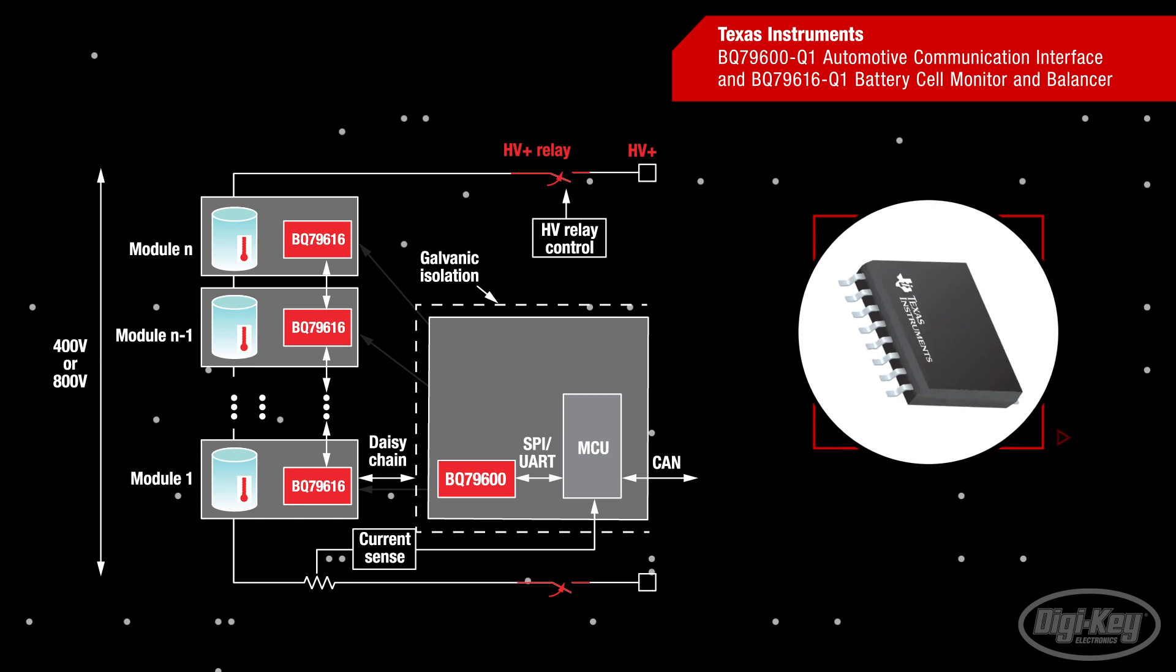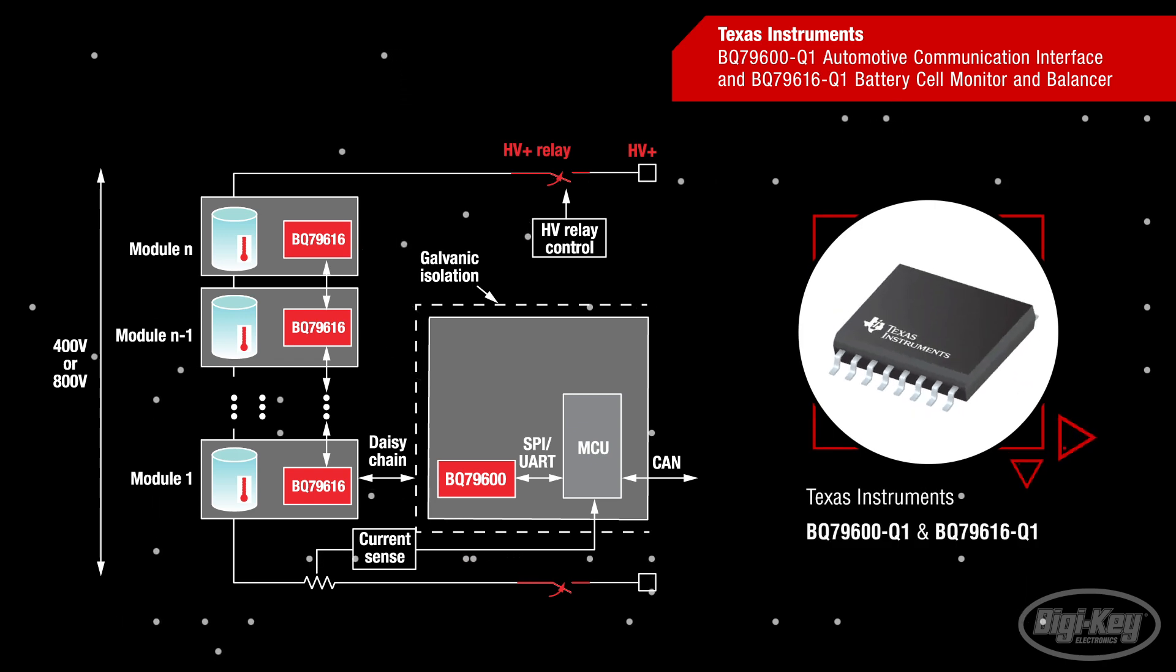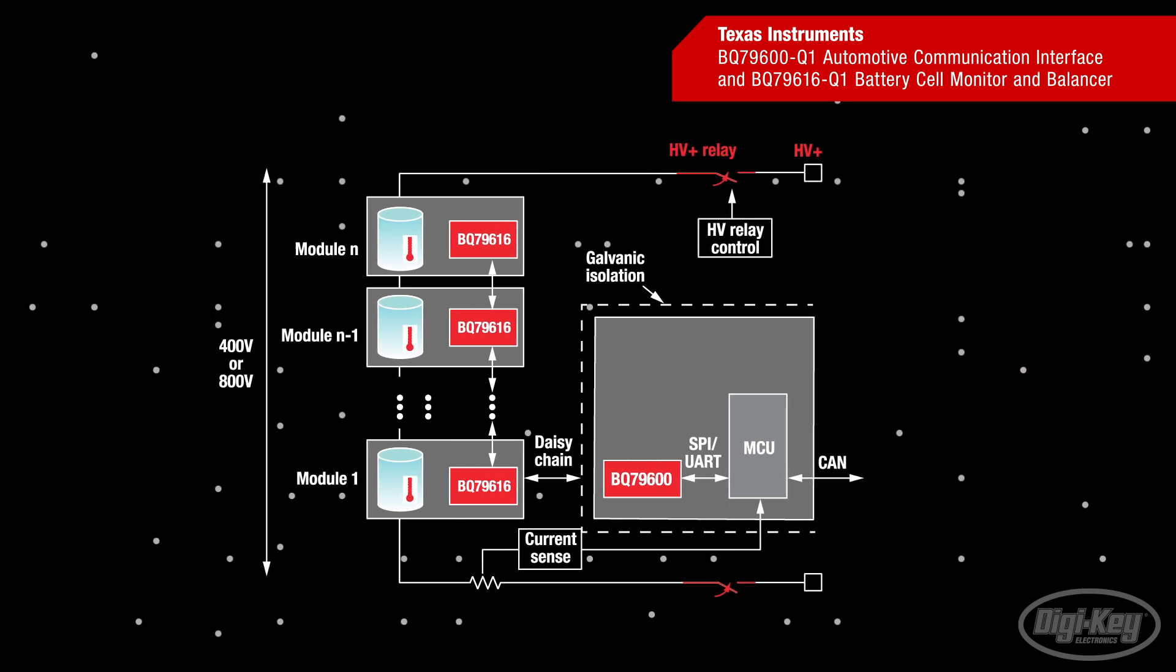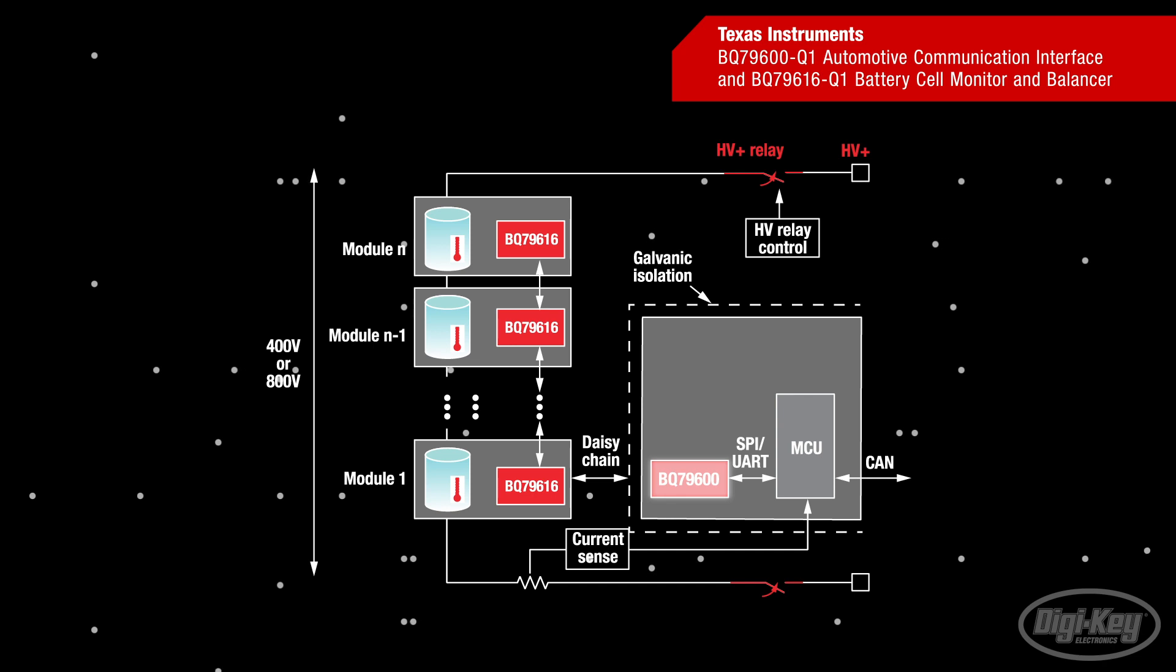Texas Instruments' family of cell monitors and balancers, BQ-79600-Q1 and BQ-79616-Q1, is a functional safety-compliant communication IC and cell monitor IC that eliminates the MCU cycling, preserving battery life while enabling high-accuracy battery monitoring.